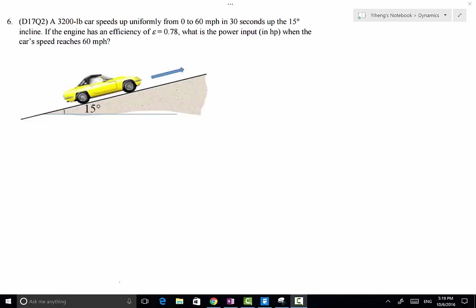In this problem we have a 3200 pound car which is speeding up uniformly up this inclined surface. This word uniformly is very important because it tells us that this car has a constant acceleration along this inclined surface.